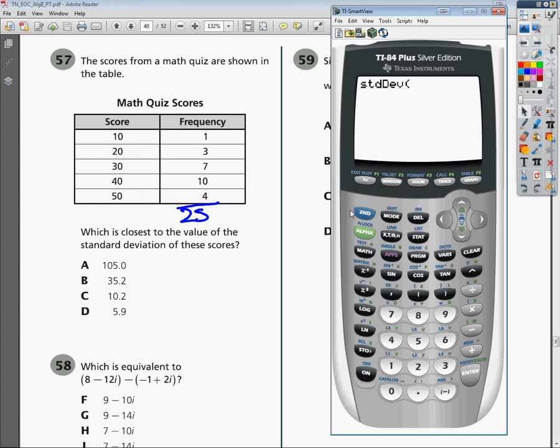This will help me find the standard deviation. I need to pick the list, so hit second, stat again. Tell me you want L1. And if you named it something else, you need to tell it you want something else. So L1 there, hit enter, and it gives me a standard deviation of 10.45 or 10.5.